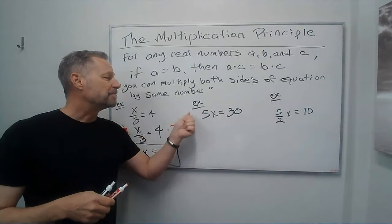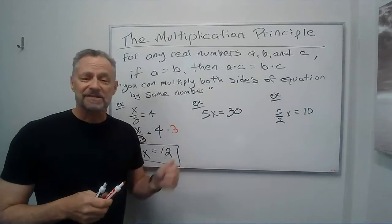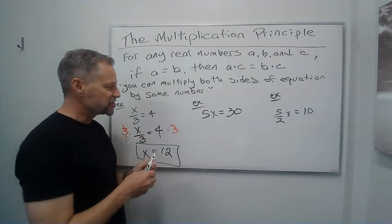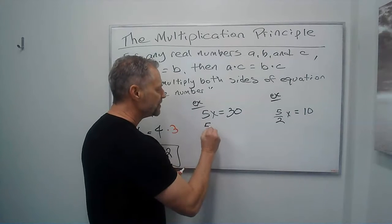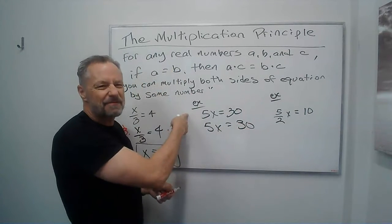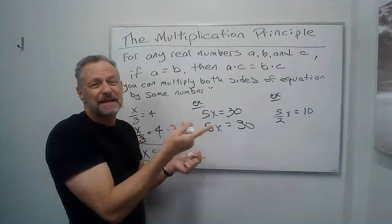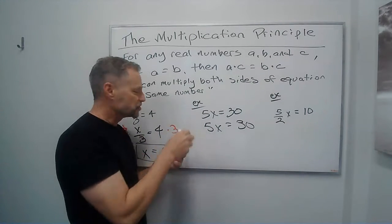Okay, next problem, 5 multiplied by x equals 30. Well, the opposite of multiplication is division. So if I have 5x equals 30, and this one I didn't have to write again. I will here because I want to see the step, I want to see my original problem, but this time I'm going to divide by 5.